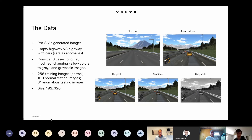We consider the case where cars are the anomalies. The normal scenario is when we have an empty road, and once we have a car, motorcycle, or truck, we consider this image as anomalous. It's a very simplified but descriptive case.